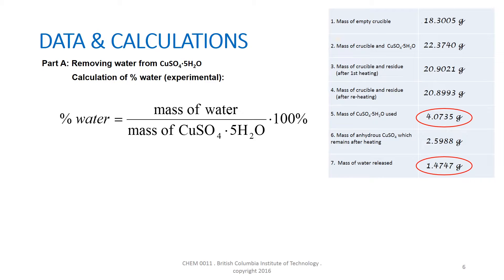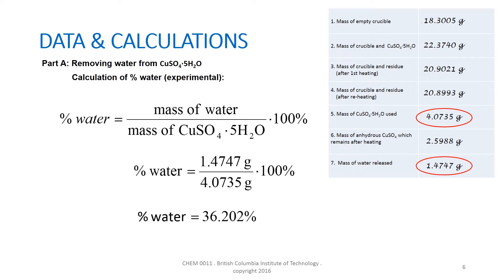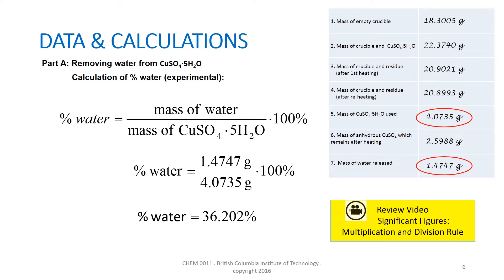Let's use these raw data to calculate the experimental determination of the percentage of water in copper sulfate pentahydrate. The percentage of water equals the mass of water divided by the mass of copper sulfate pentahydrate, multiplied by 100%. The mass of water from line 7 is 1.4747 grams, and the mass of copper sulfate pentahydrate from line 5 is 4.0735 grams. Performing the calculation and applying significant figures rules for division gives an answer of 36.202%, which has 5 significant figures. It may be helpful to review the video on significant figures, multiplication and division rule.